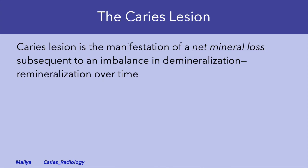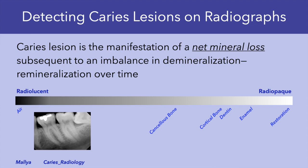Let's start by defining a caries lesion. What we evaluate clinically or radiographically as a caries lesion is a consequence of imbalance in demineralization and remineralization over time, resulting in a net mineral loss. It's this net mineral loss that makes caries visible on radiographs. Radiographic contrast between tissues is based on their mineralization. When caries occurs it causes loss of mineral content, making the lesion appear radiolucent relative to the surrounding enamel and dentin.